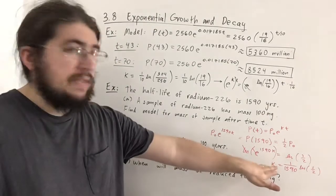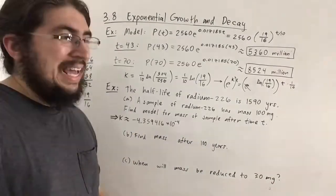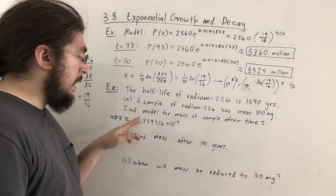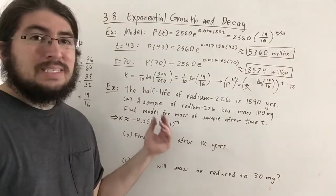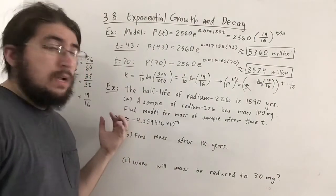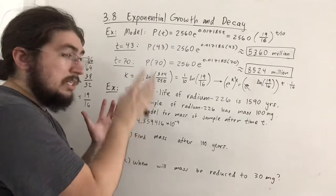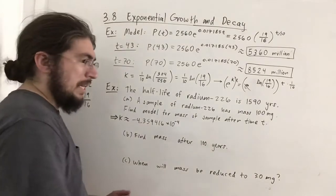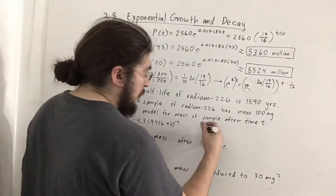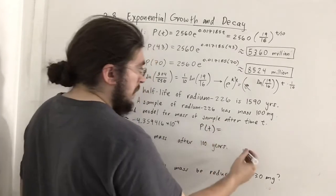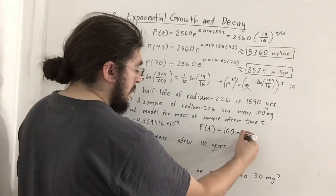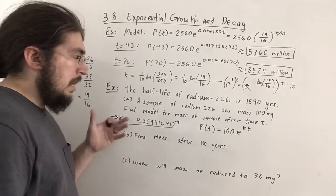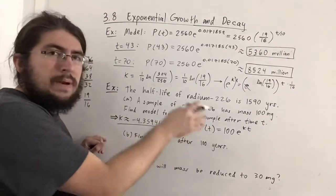Approximating k: it came out to about -4.359416 × 10⁻⁴, meaning there are three zeros after the decimal before the first significant digit. Rather than writing that out, our model is P(t) = 100·e^(kt) where k is that constant. We'll use this in calculations for parts B and C.